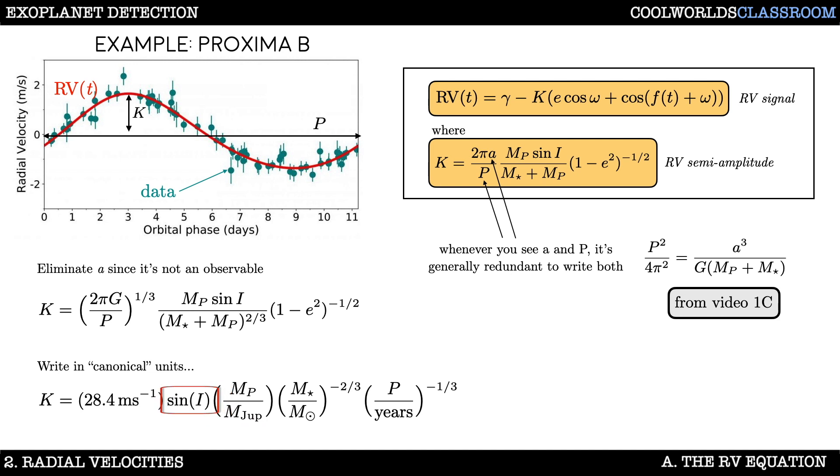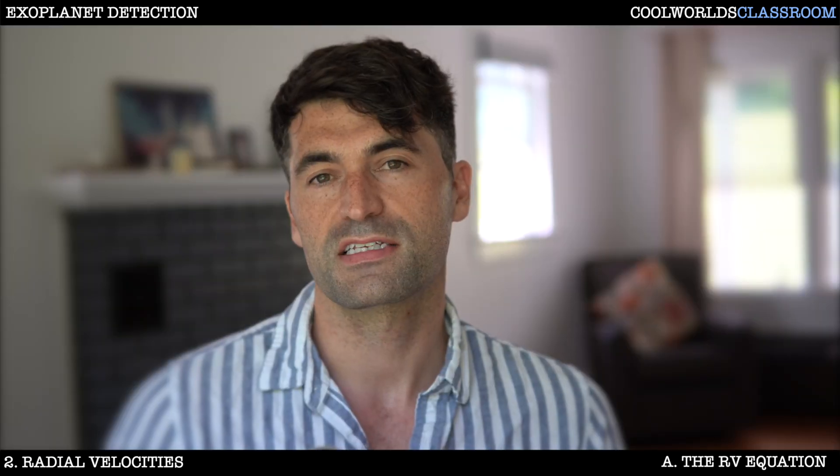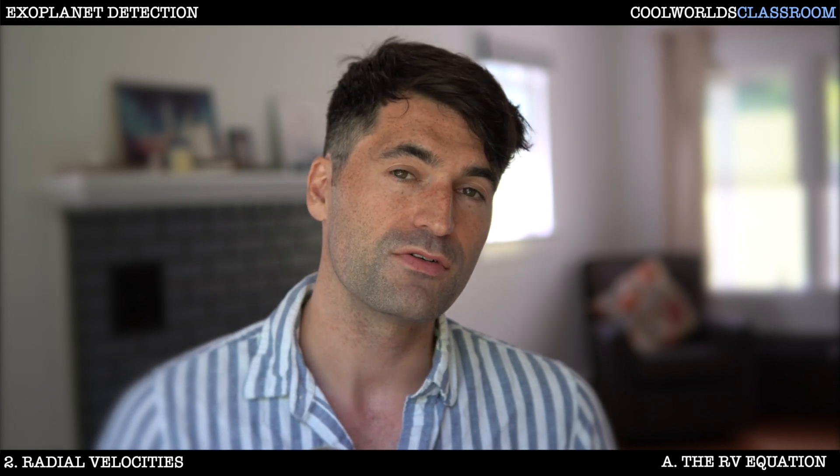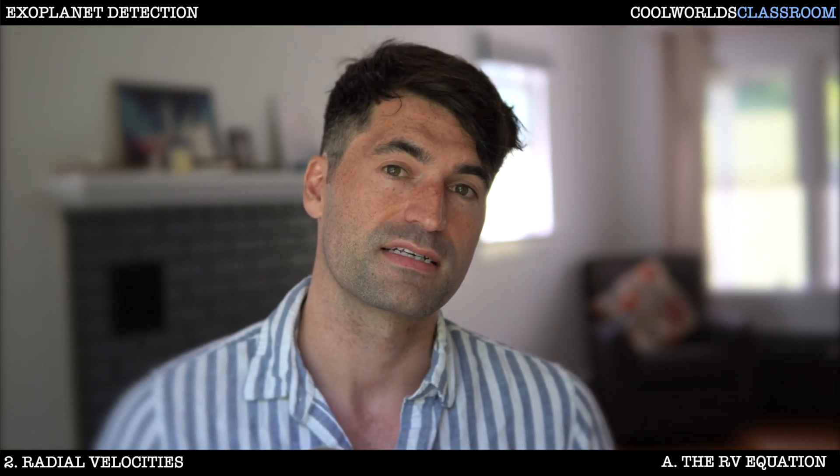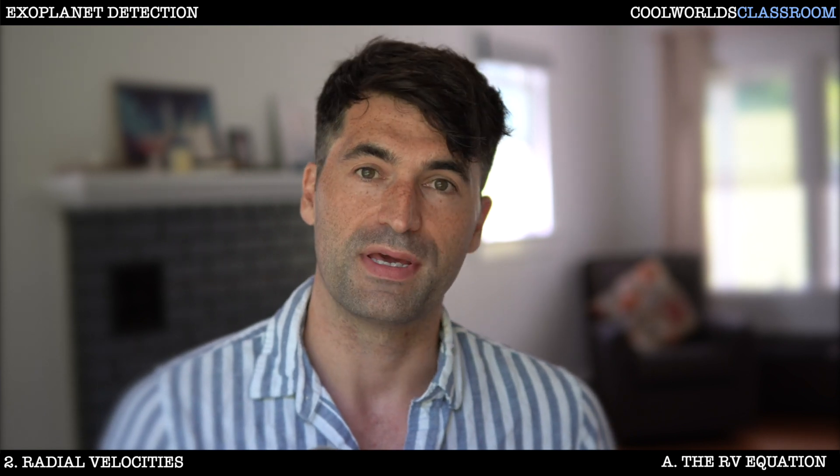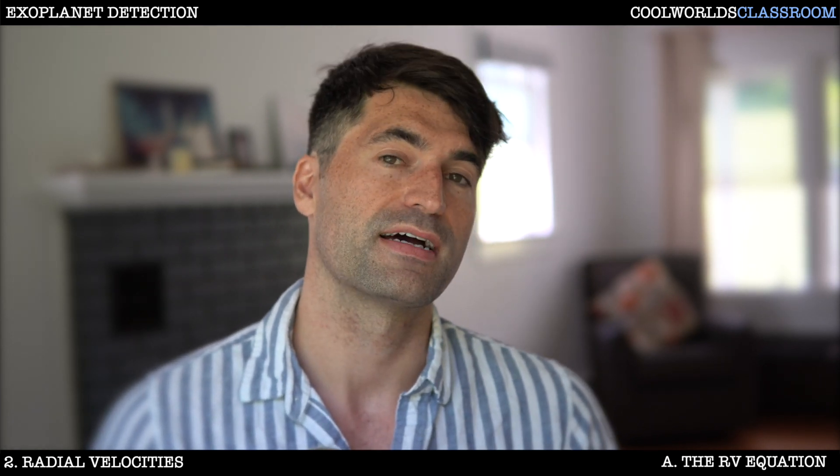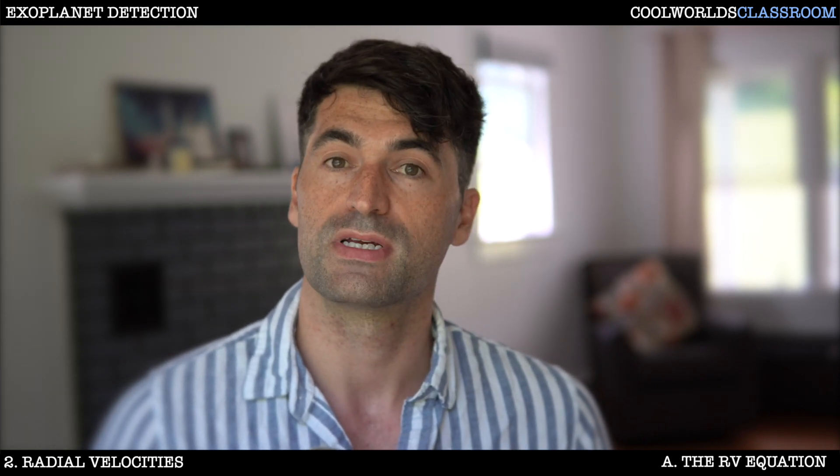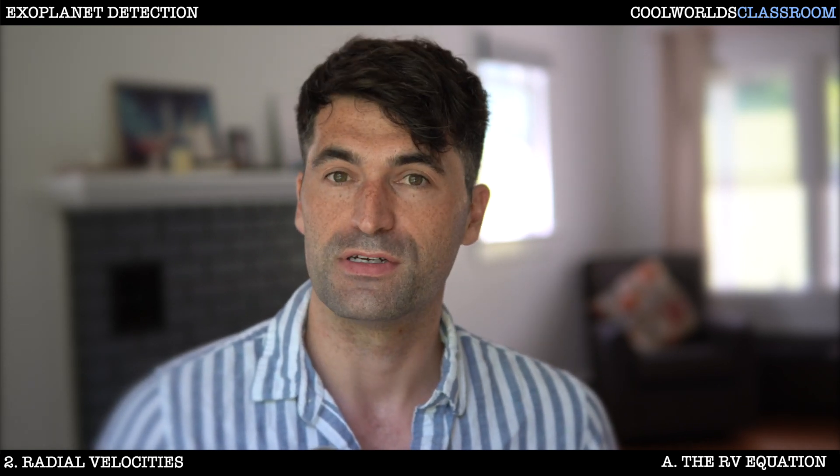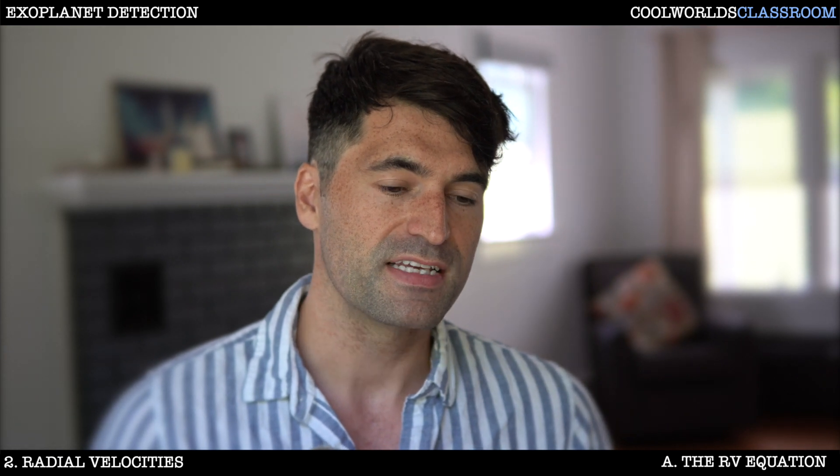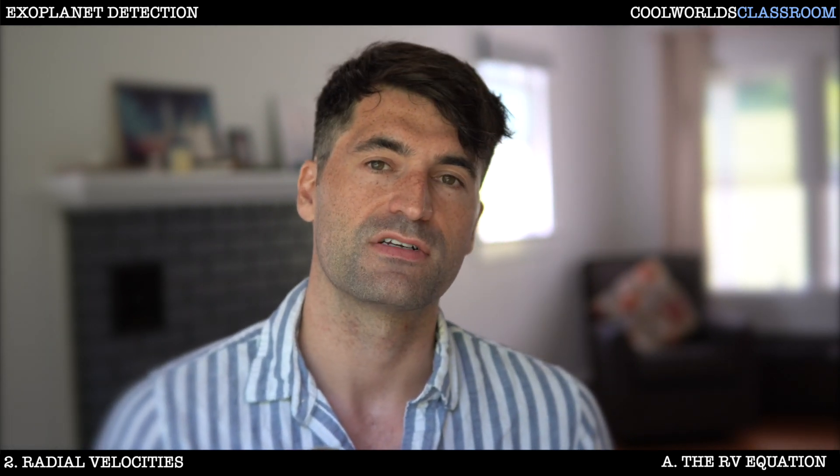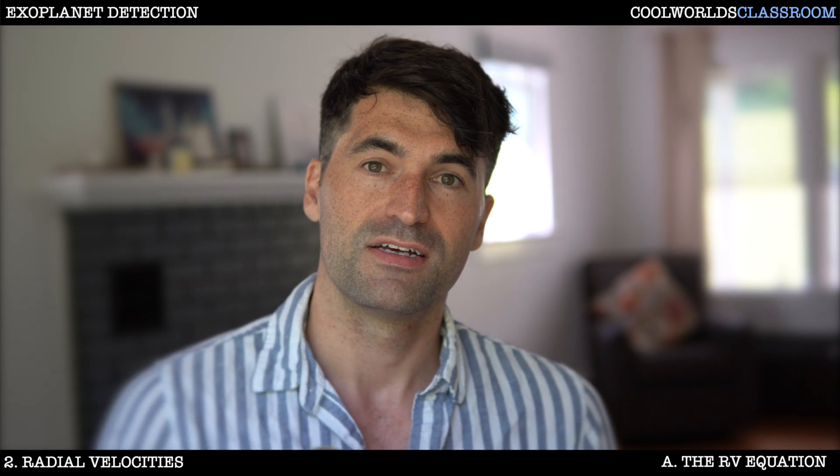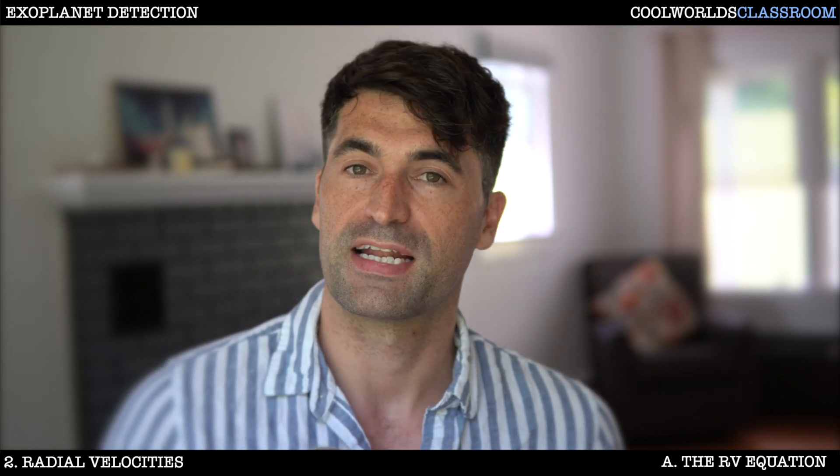Critically notice that there's a pesky sine i term in here. That sine i term is crucial because in general we don't know what its value is. So in truth we don't really measure mp, only mp multiplied by sine i. Now since sine i is a number which is always less than one, then that means that mp sine i is often referred to as the minimum mass. This is a really important and basic limitation of the radial velocity method. Truthfully, radial velocities don't measure planet masses. They only measure minimum planet masses.